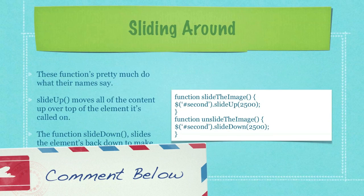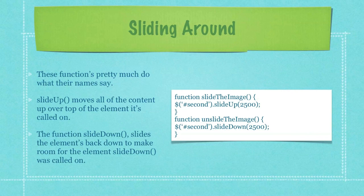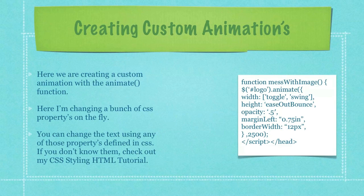These functions pretty much do what their names say. Slide Up moves all of the content up over the element that it is called on. And the function Slide Down slides the elements back down to make room for the element it was called on. Here we're creating a custom animation with the Animate function. Here I'm changing a bunch of CSS properties on the fly. You can change the text using any of those properties defined in CSS. And if you don't know them, check out my CSS Styling HTML tutorial.